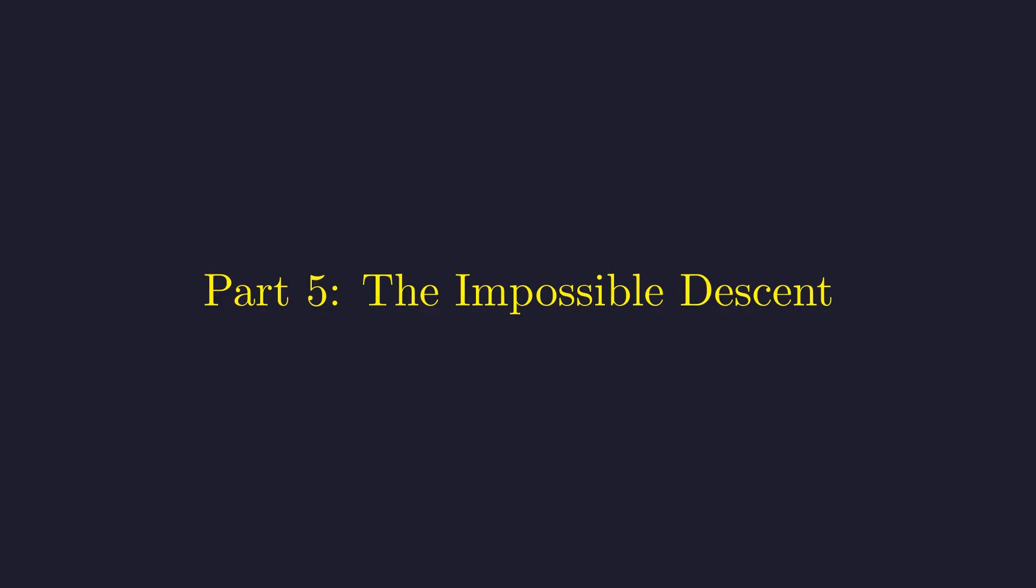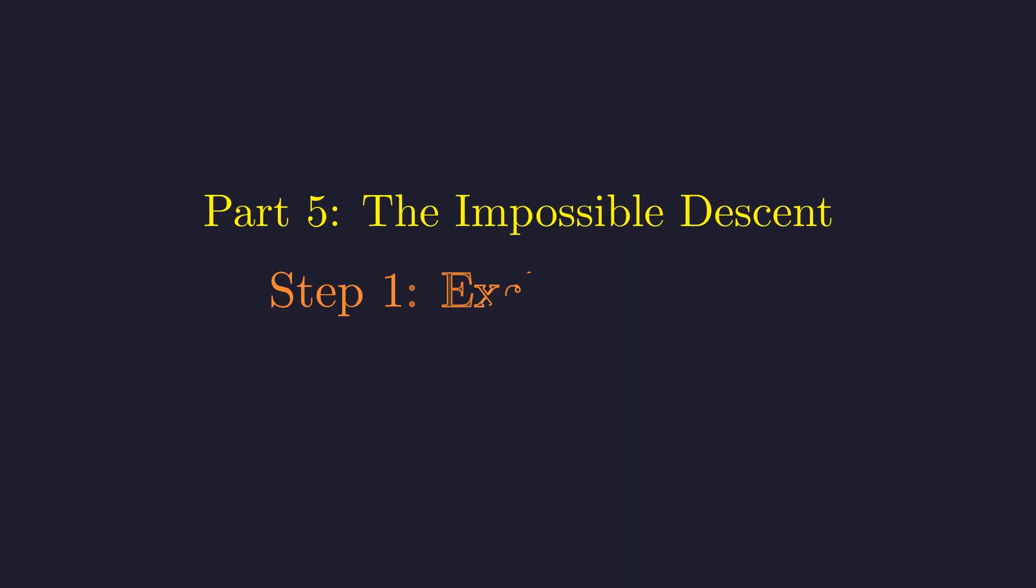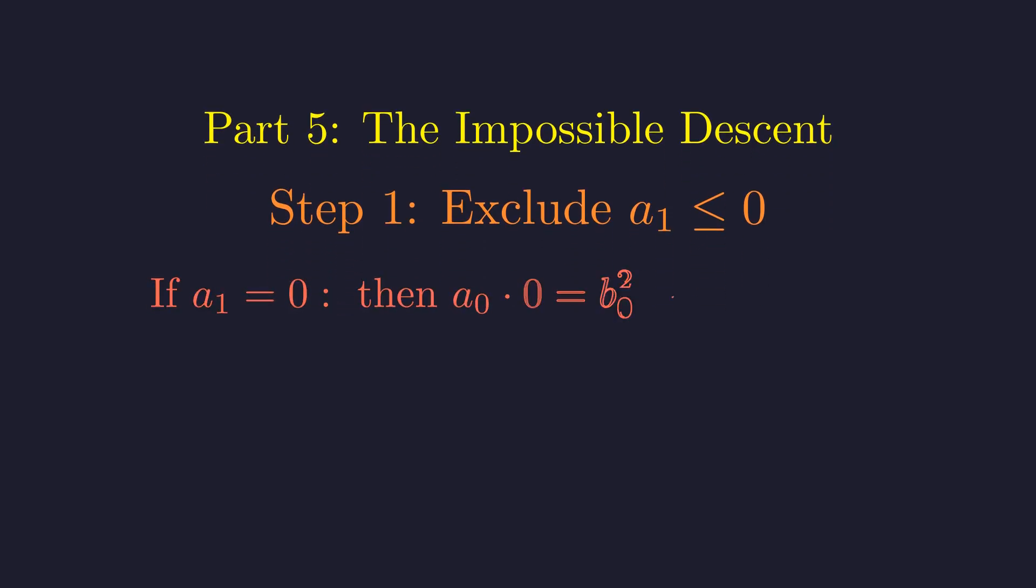Now we reach the climax of the proof. We first show that a1 must be positive, then use this to derive our contradiction. First, let's show that a1 cannot be 0 or negative. If a1 equals 0, then by Vieta's product formula, we get k equals b0 squared, making k a perfect square. This contradicts our assumption.